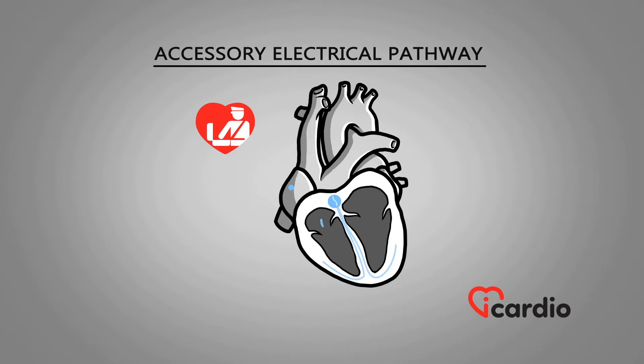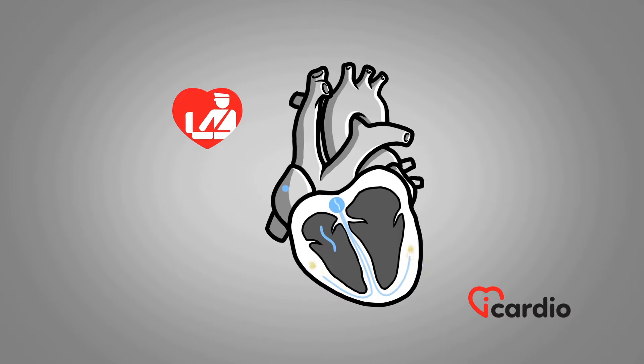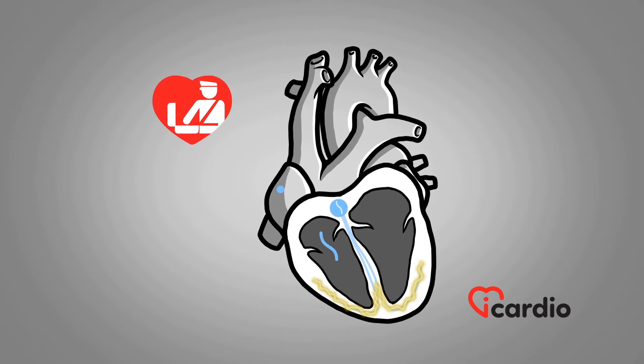The second, less common mechanism is caused by an extra electrical pathway present from birth to the right or left. The pathway connects the atrium to the ventricle and bypasses the AV node's control. The extra electrical pathway can sometimes have no consequences and cause no arrhythmia.